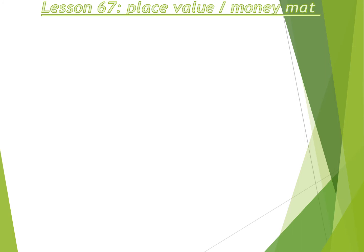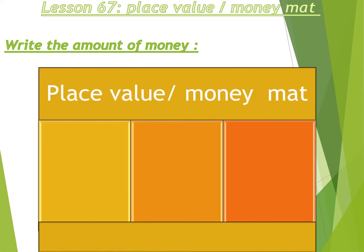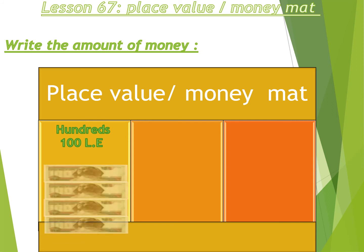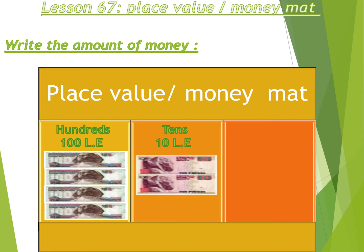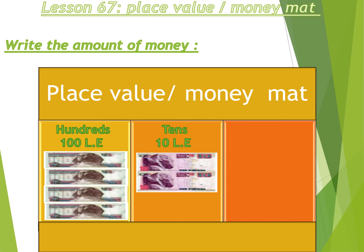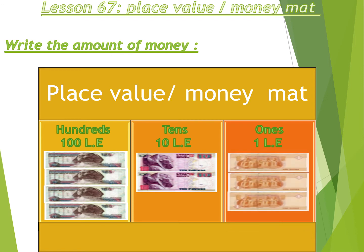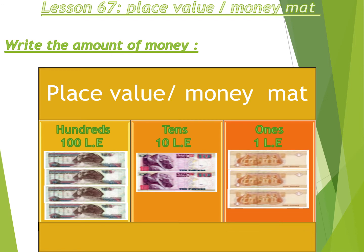Lesson number 67: place value money mat — write the amount of money. We have hundreds: banknotes of 100 pounds. We count one, two, three, four hundreds. Next is the tens place: how many banknotes of 10 pounds? Two. Then the ones place: banknotes of one pound — one, two, three. So the number is 348.